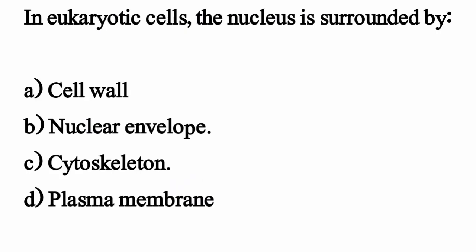In eukaryotic cells, the nucleus is surrounded by — the correct option is Option B: Nuclear envelope.